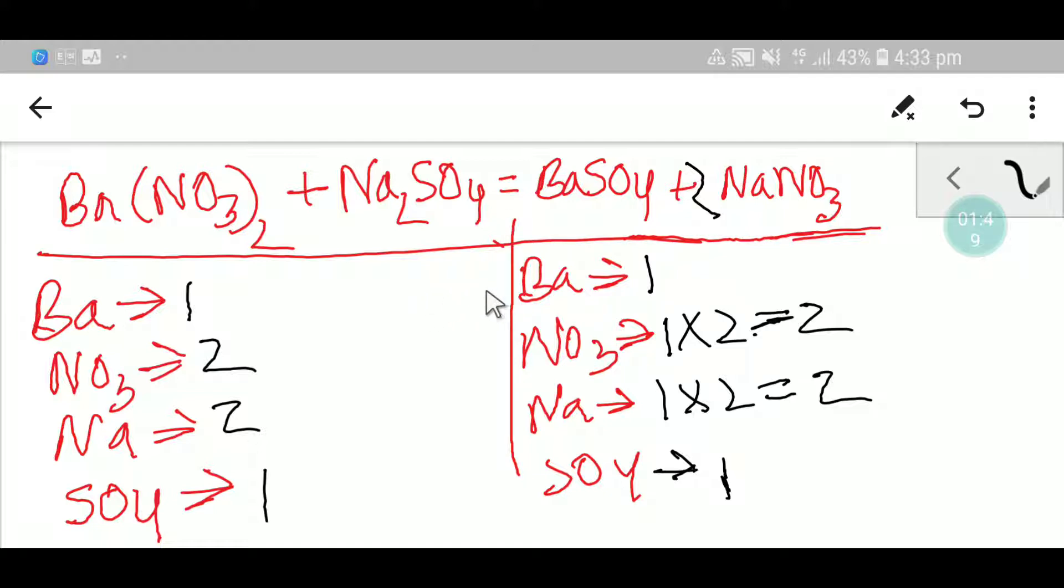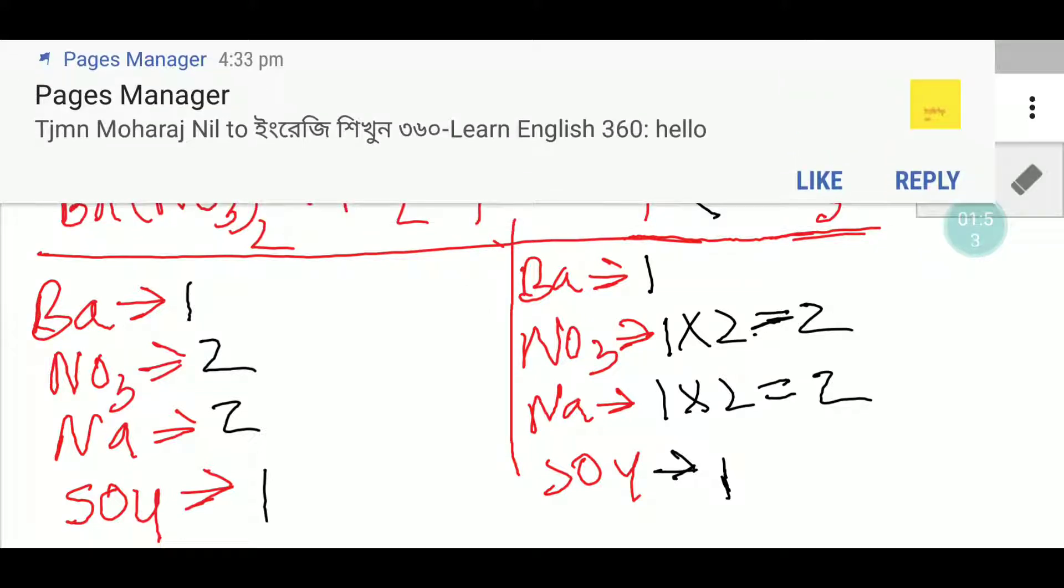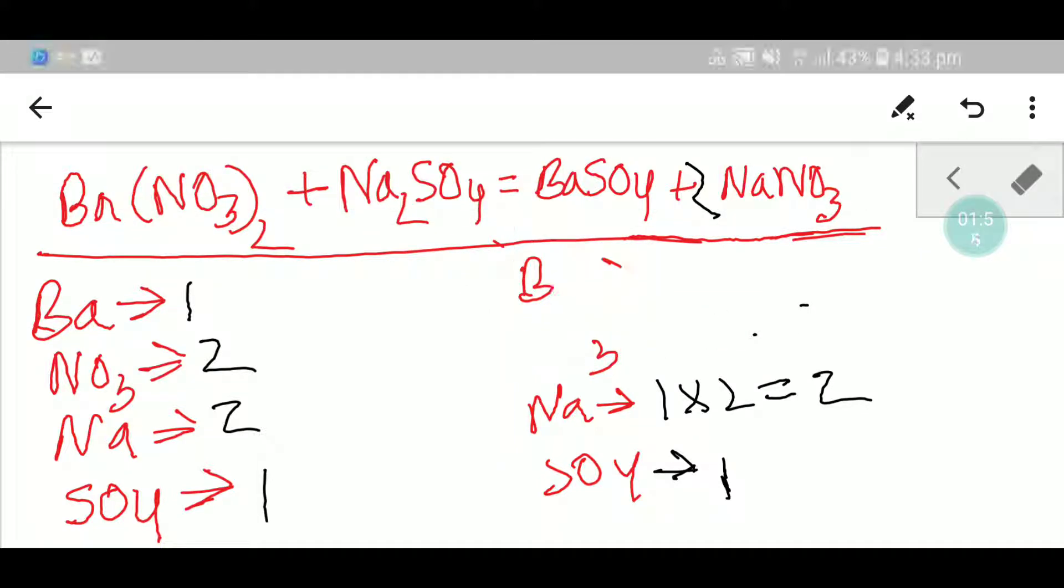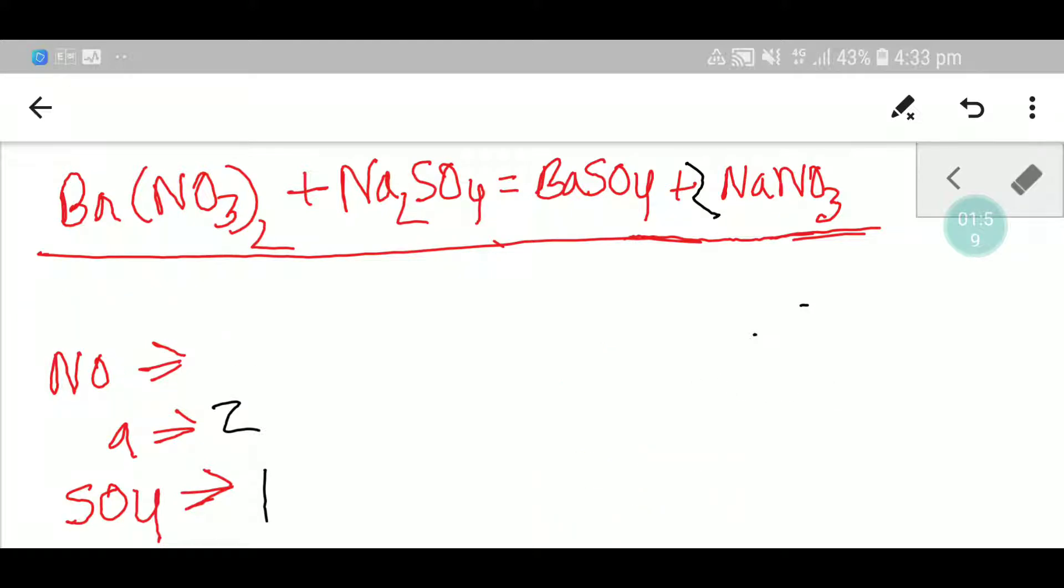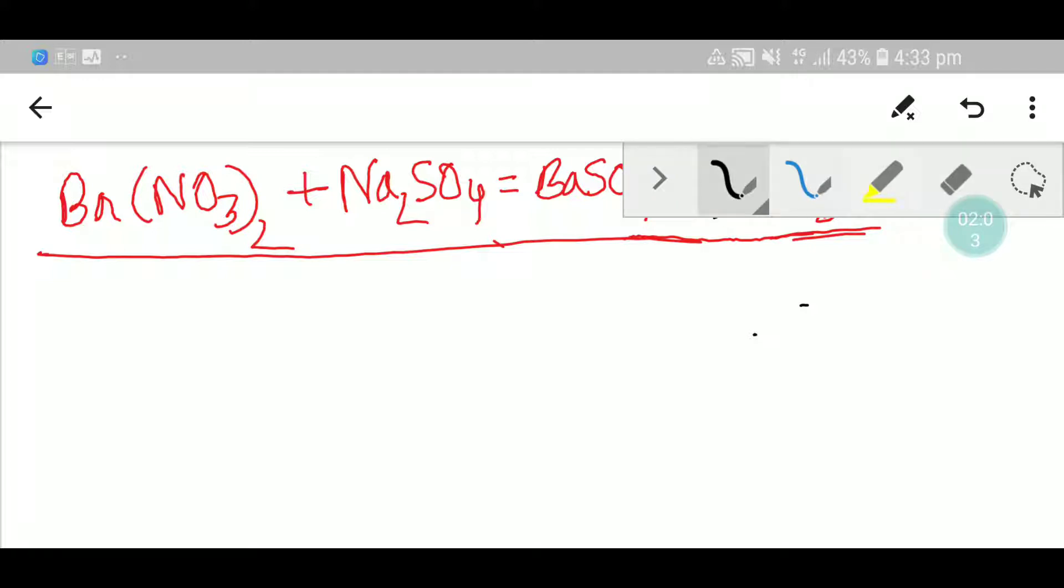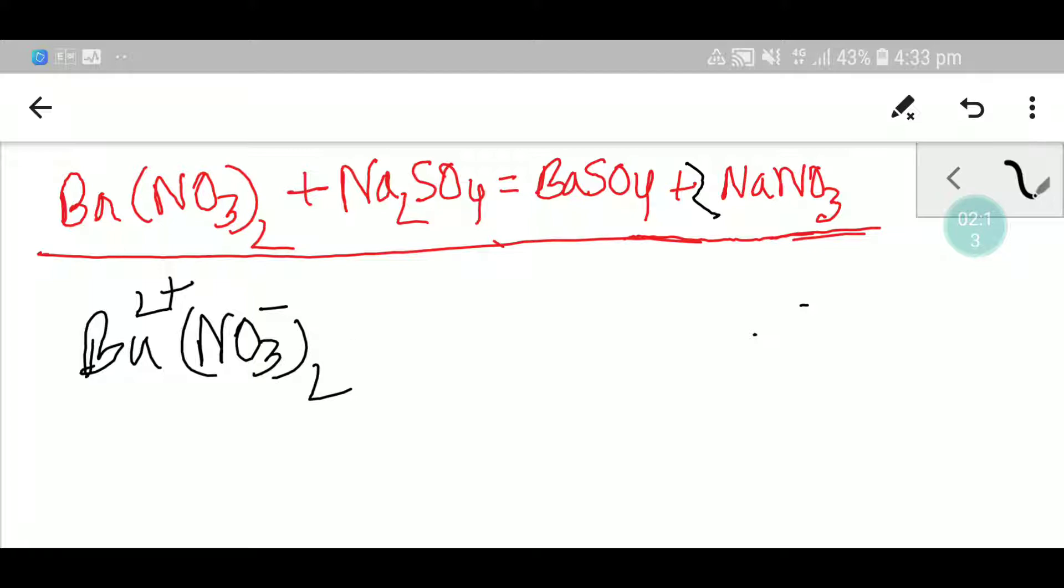So now I will show you the second way to balance this equation. I think this second way will be very helpful to balance this reaction in your exam hall. You know that barium two plus and nitrate one minus. To balance positive negative you have to add here two.